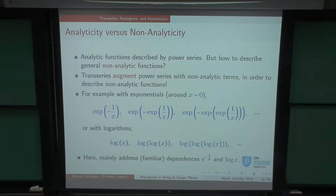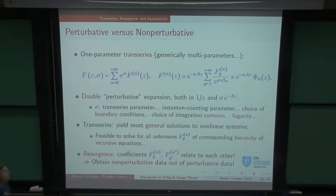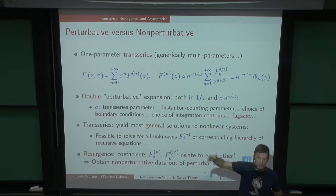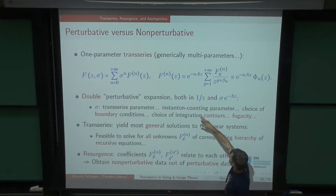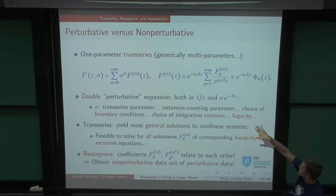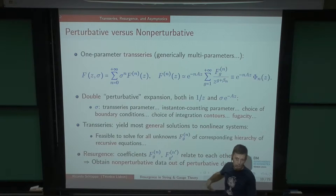So far we've only needed those two basic trans-monomials, though higher iterations have been seen in the literature in SYK matrix models and similar. A trans-series just puts all these guys together in a double series expansion. F_0 is just a perturbative series; with N bigger than 0 I have instanton-like contributions. A would be the instanton action — that's something familiar — and those are different N-instanton sectors, which you can think of as the N-th trans-monomial power.